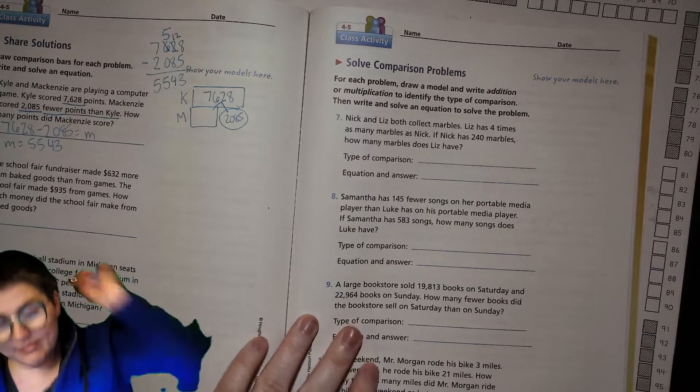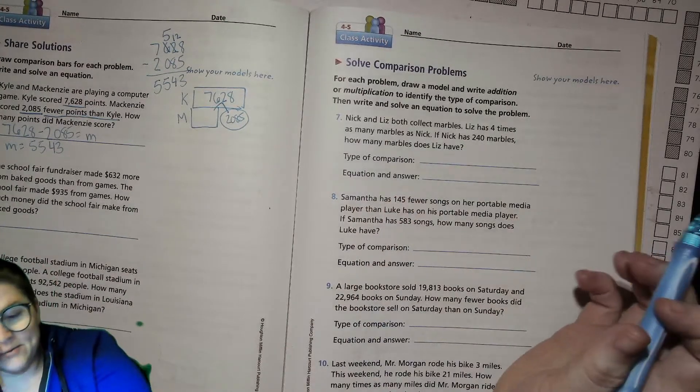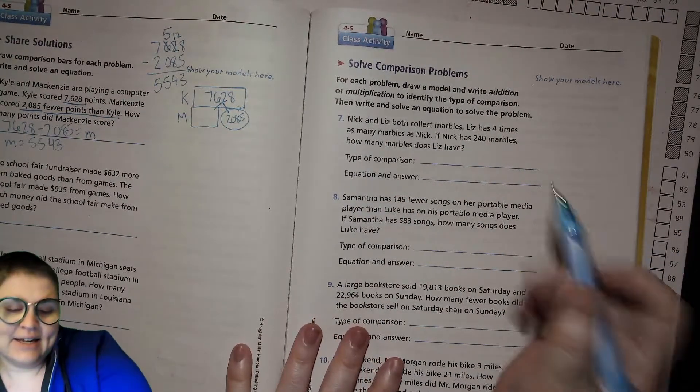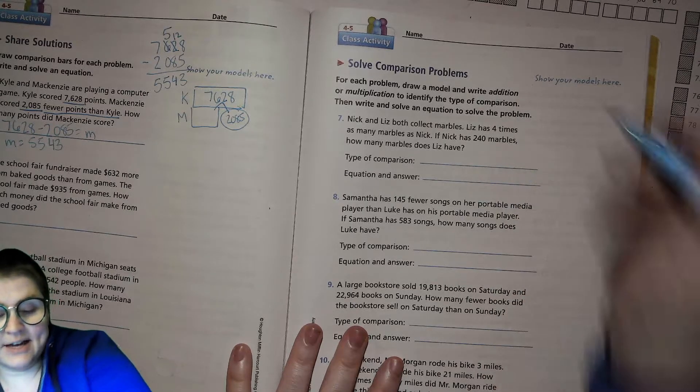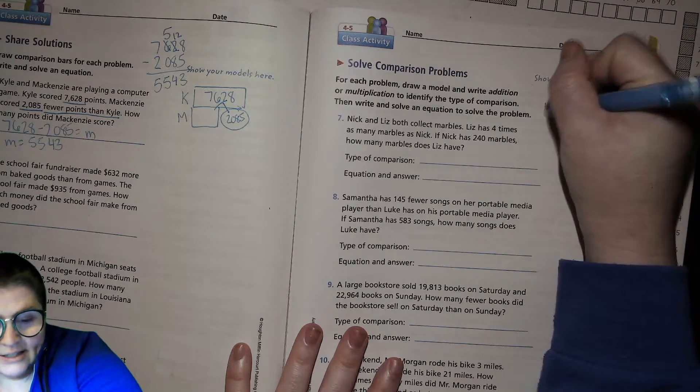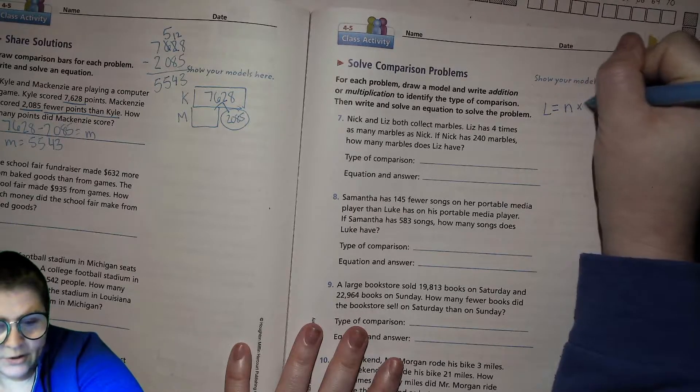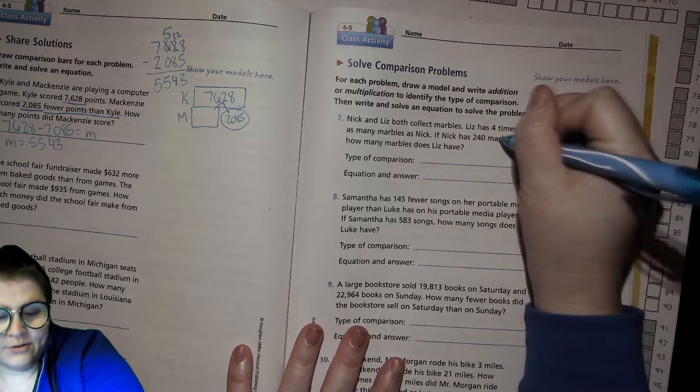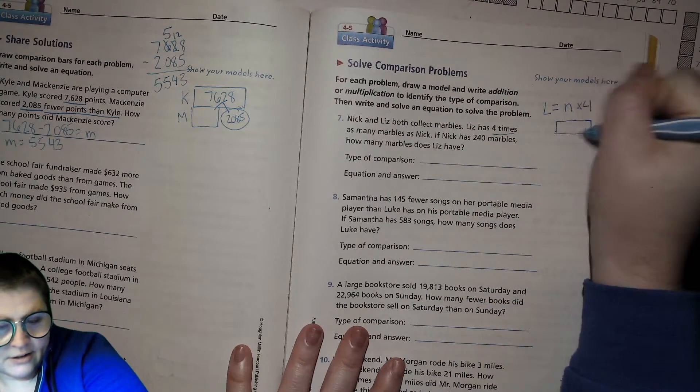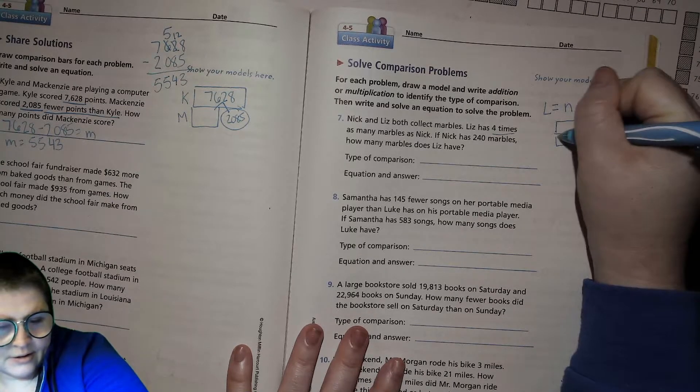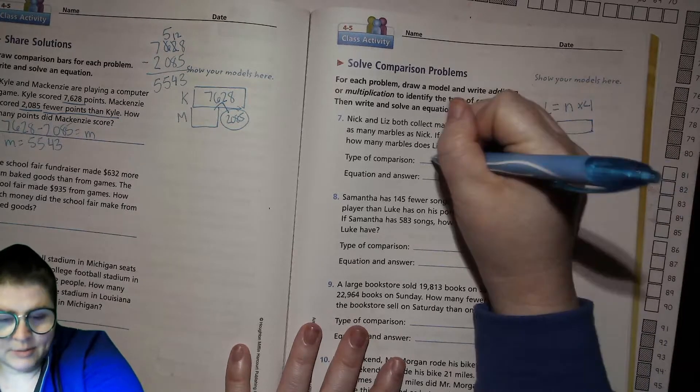Number 7: Nick and Liz both collect marbles. Liz has 4 times as many marbles as Nick. If Nick has 240 marbles, how many marbles does Liz have? We know that Liz has Nick's number times 4, right? 4 times what he has. If you wanted to draw it, Nick has a quarter of what Liz has. So this is multiplication.